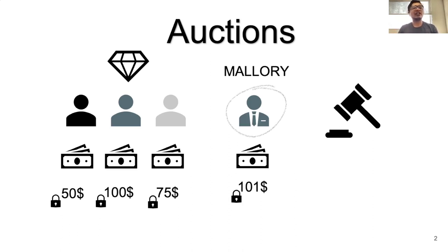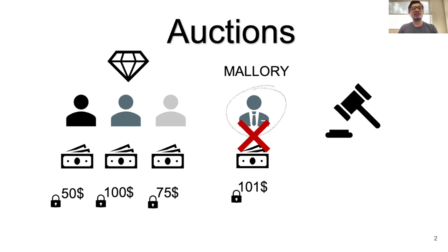However, this intuition turns out to be incorrect. Encryption does not prevent an adversary — say Mallory — from outputting a ciphertext related to one of the parties' encryptions. For example, Mallory can output an encryption of one more than the middle party's bid, such as $101. Standard encryption security does not define or prevent such attacks. We want each party's interaction to be independent, and this study began in 1991 — it is called non-malleable cryptography.